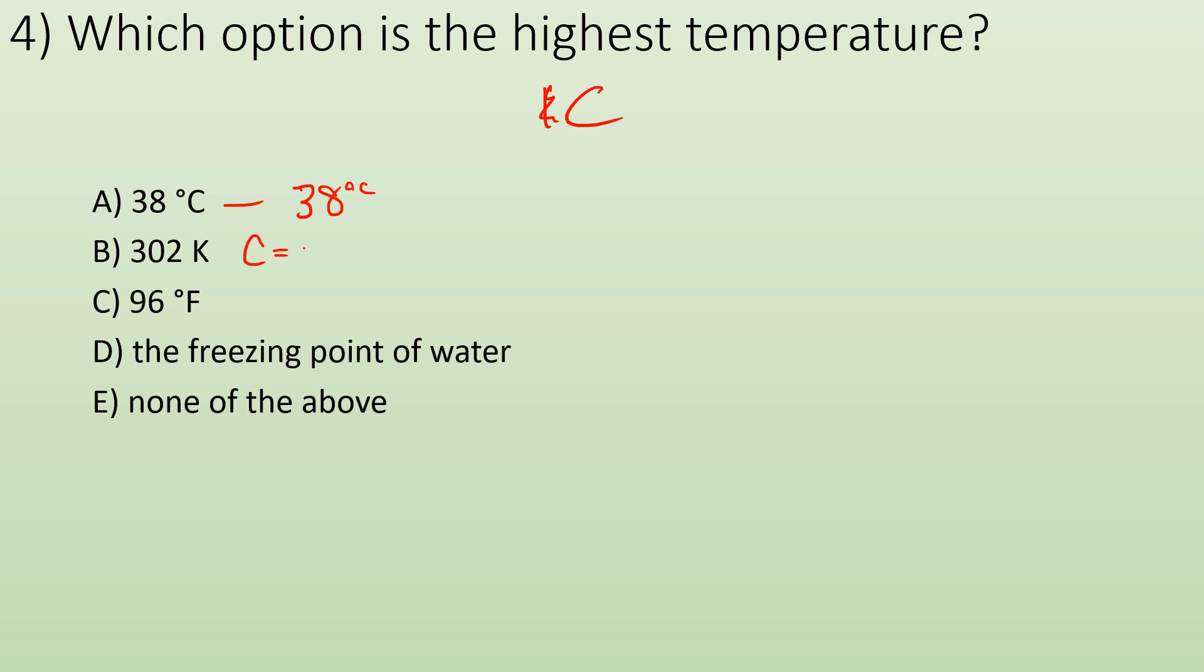Well, I know Celsius is going to equal Kelvin plus 273. And now it's minus. Celsius is always going to be the smaller number. So if I got 302 Kelvin minus 273, that's going to give me 29 degrees Celsius.